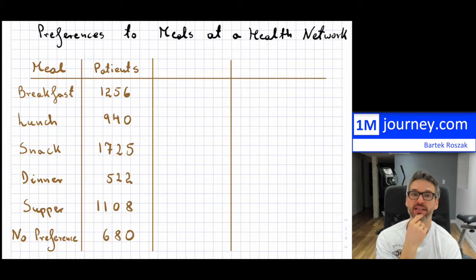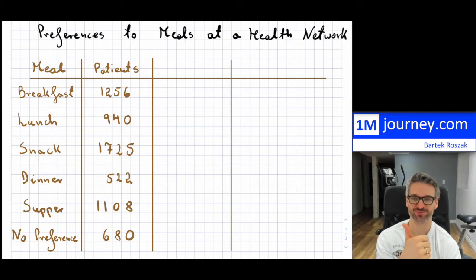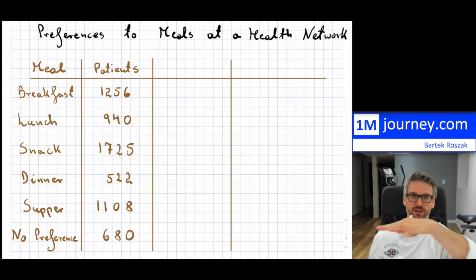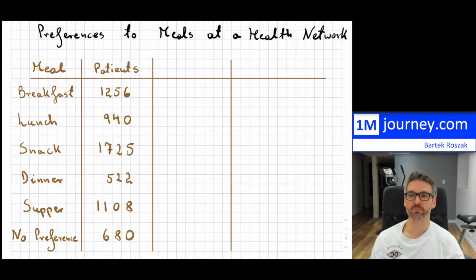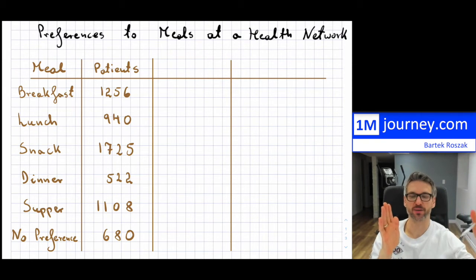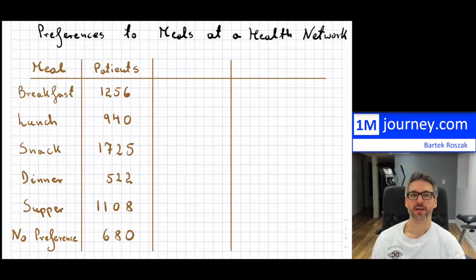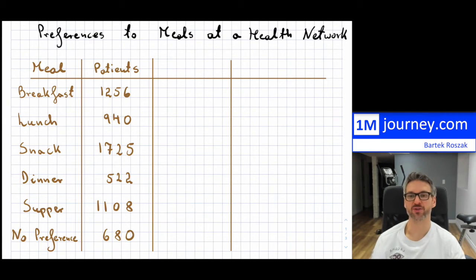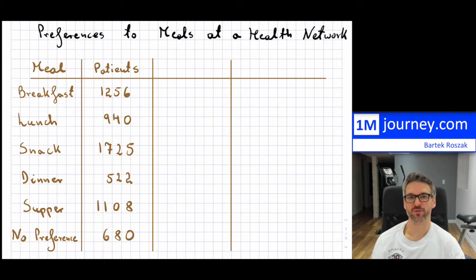Now I'm going to begin constructing a bar graph. A bar graph will always have a title — your teachers don't like when you don't have a title. It's going to have your x-axis, your horizontal axis. Because we have these meal preferences — breakfast, lunch, snack, dinner, supper, or no preference — our variable is going to take on those values. Then your results are going to go on the y-axis — in this case, how many patients for each preference.